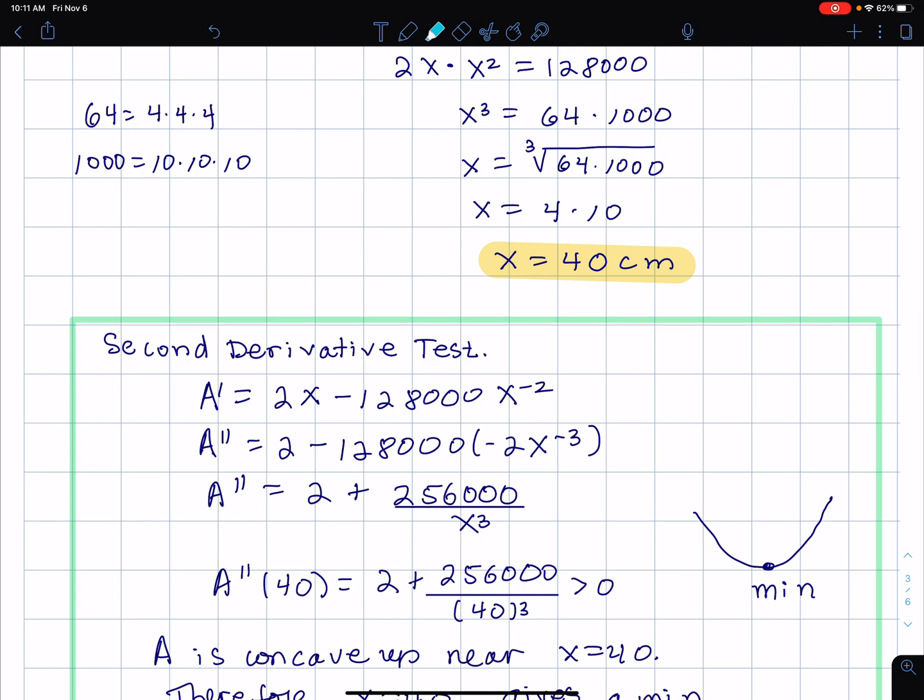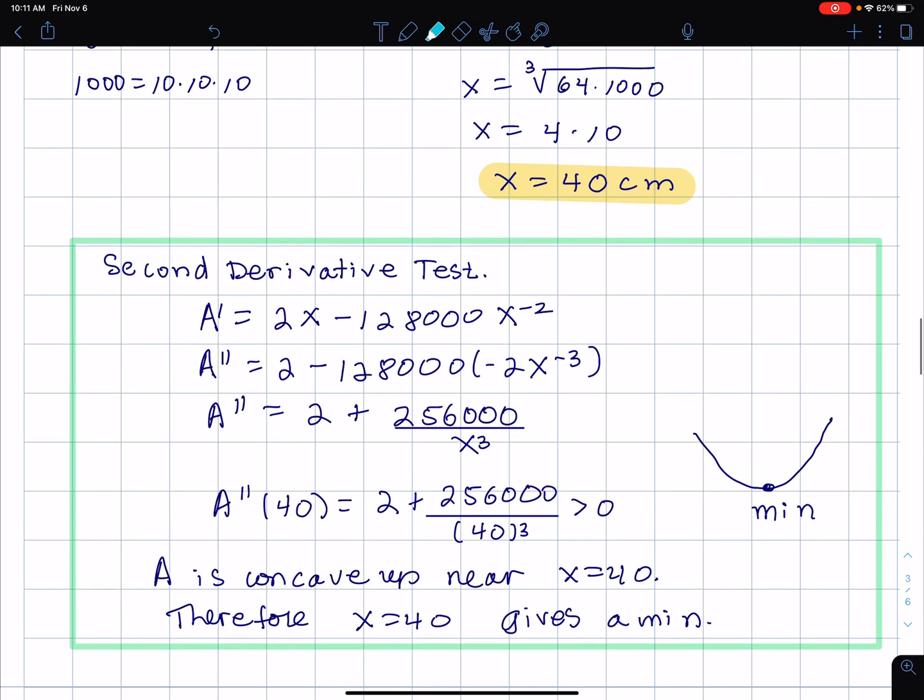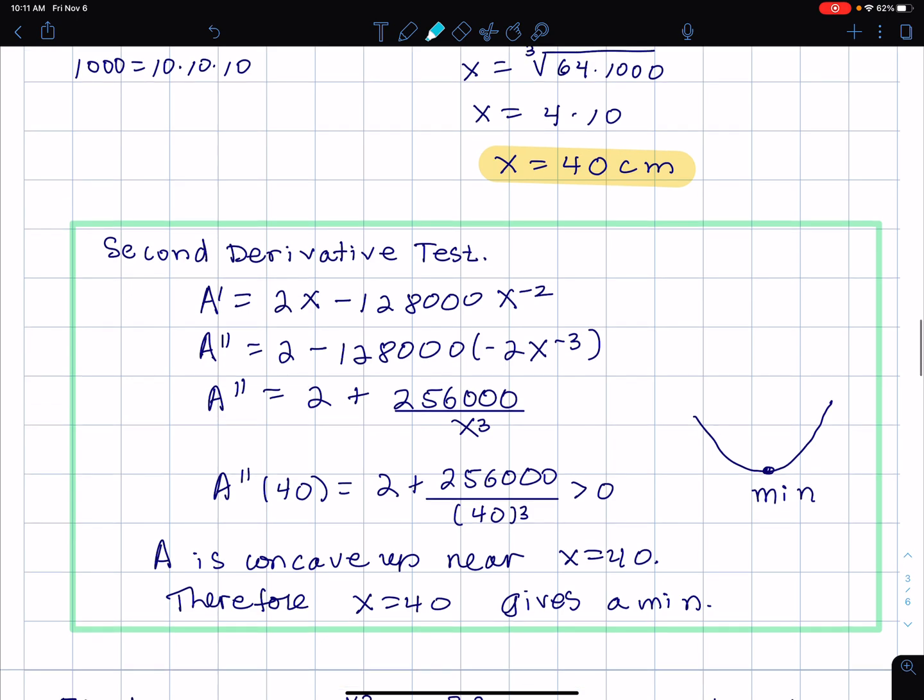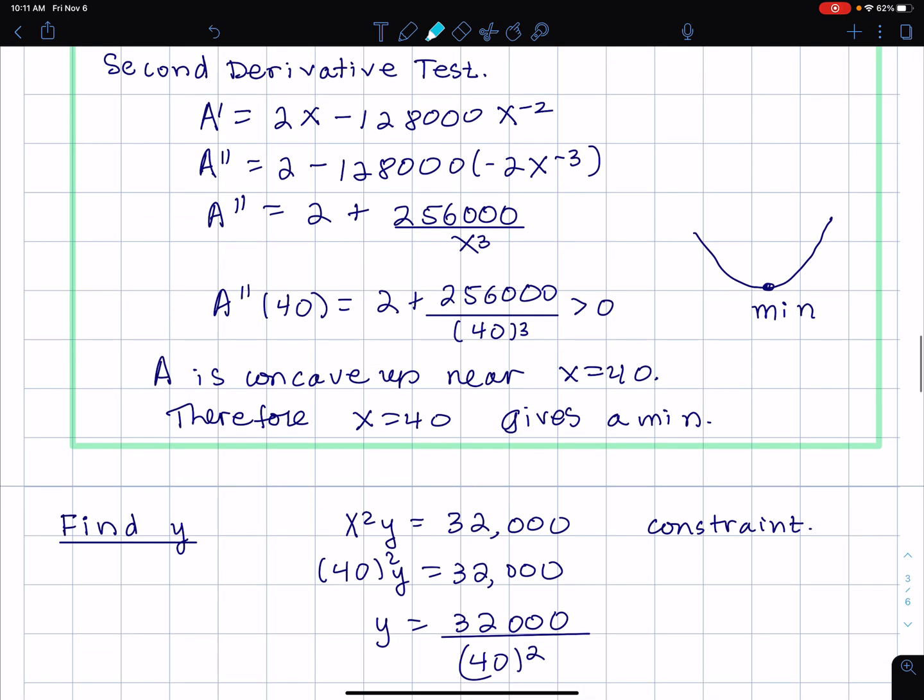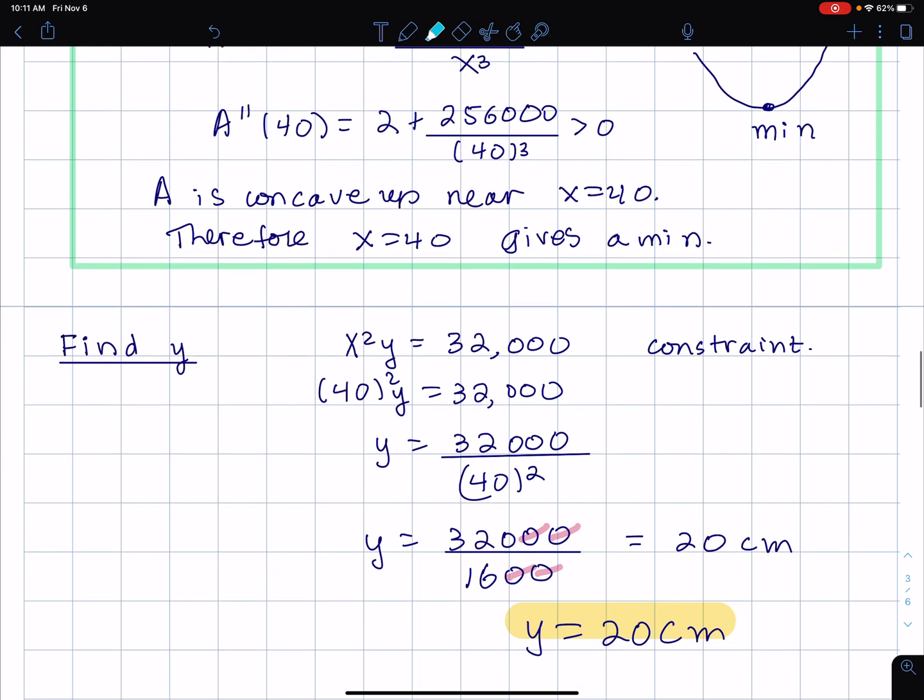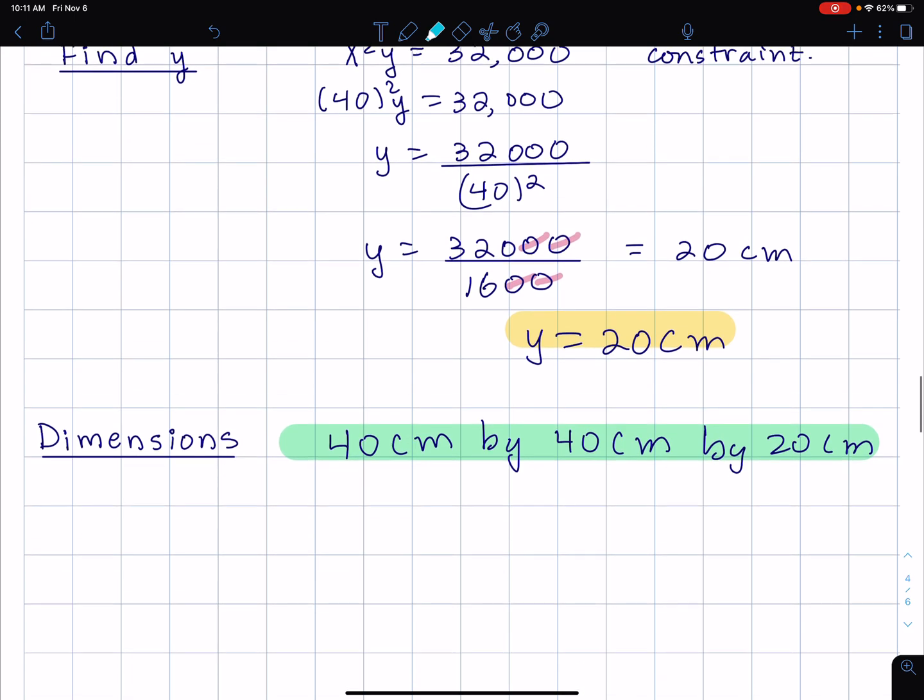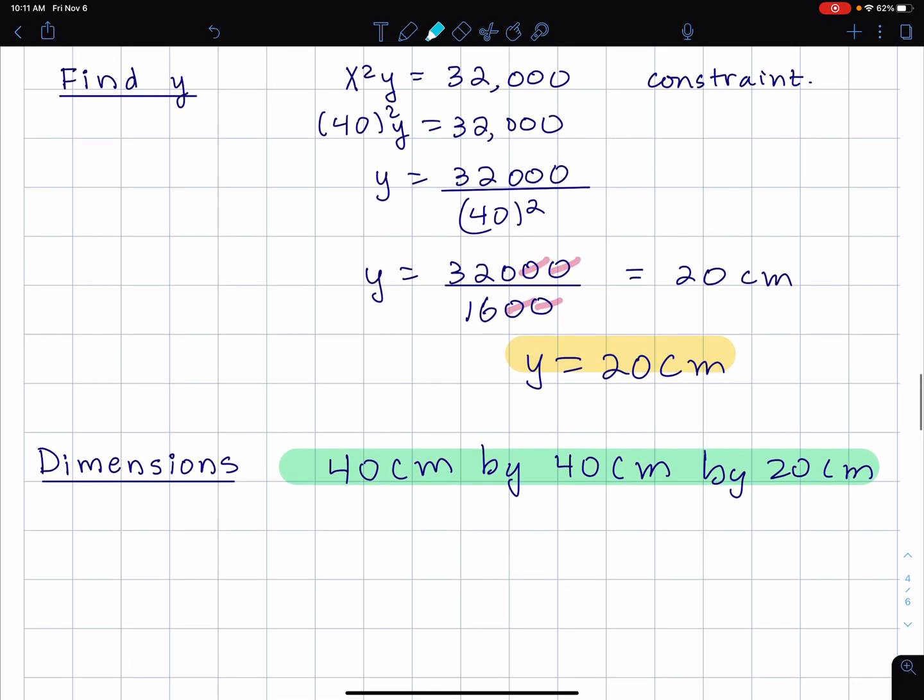Now, once you're doing that, you can go the extra mile and take a second derivative, and in fact show that the second derivative is positive, meaning the graph's concave up, which means that x equals 40 gives a minimum. Then easily find y by plugging x equals 40, that gives 20. So here we have our dimensions. Turns out that the height is half of the side of the square base. That's all. Thank you.